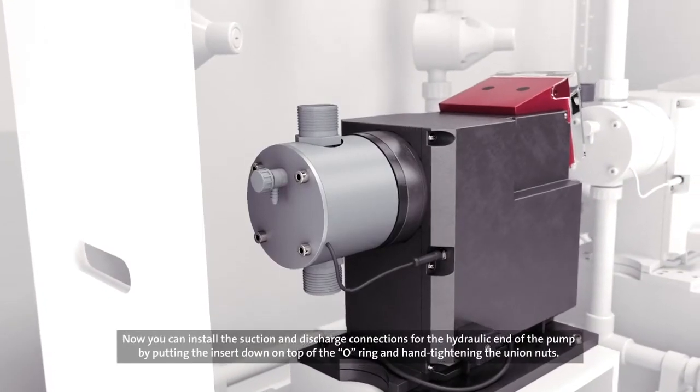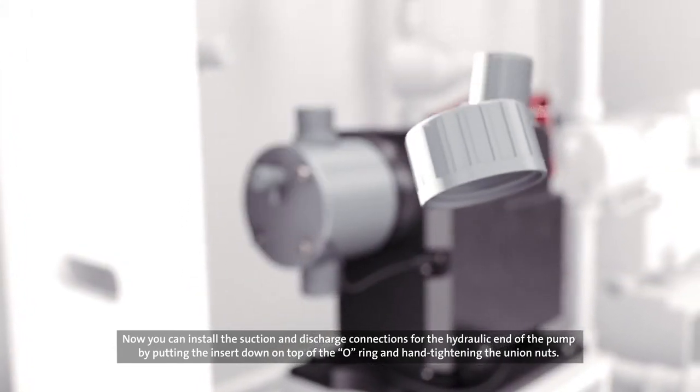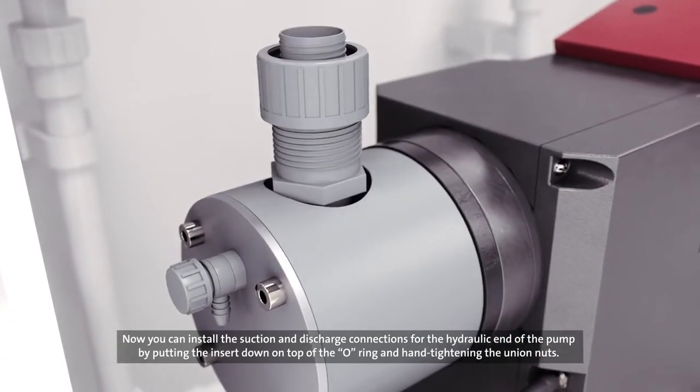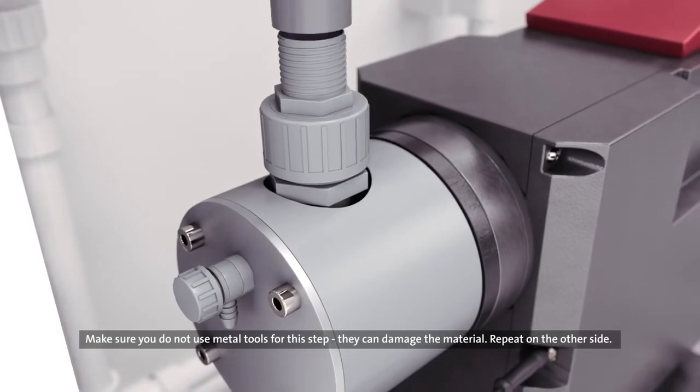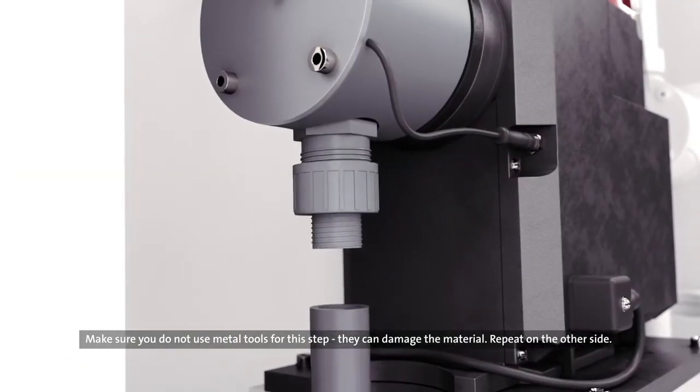Now you can install the suction and discharge connections for the hydraulic end of the pump by putting the insert down on top of the o-ring and hand tightening the union nuts. Make sure you do not use metal tools for this step. They can damage the material. Repeat on the other side.